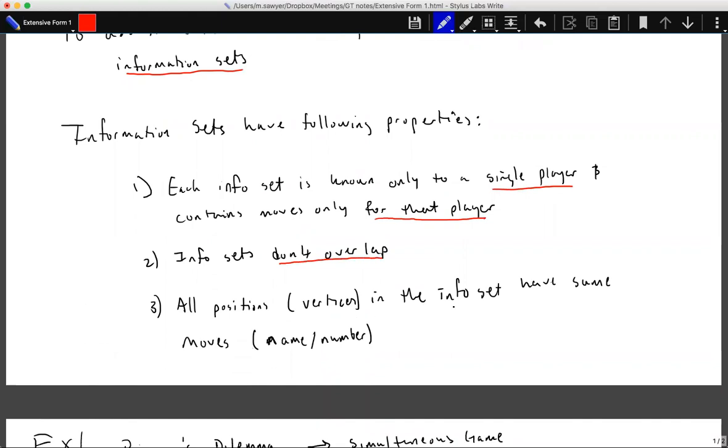And all vertices in the information set, so all positions, have the same moves, the same name of moves and the same number of moves. This is because an information set indicates that they don't know necessarily what has happened for the player before them.